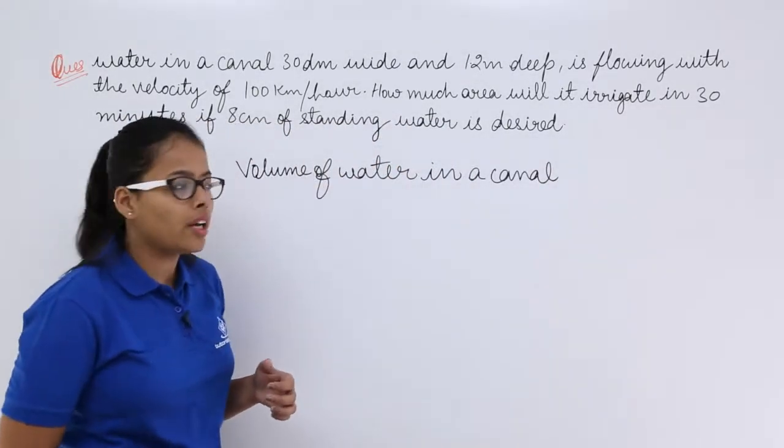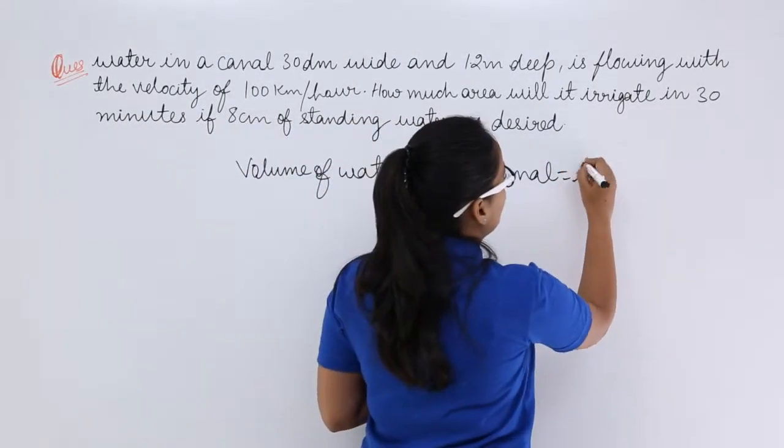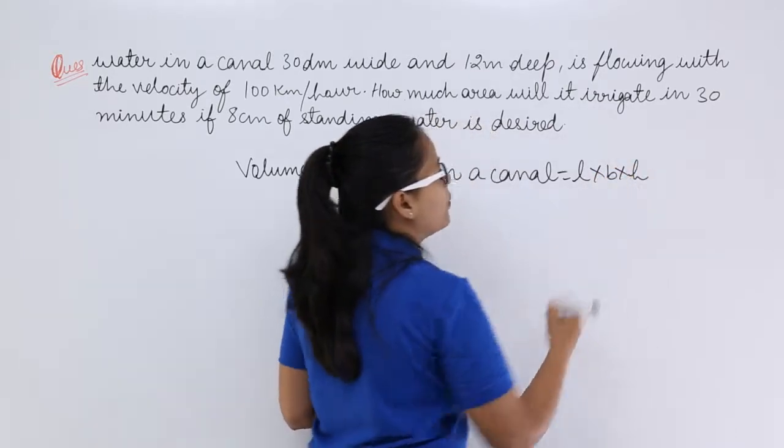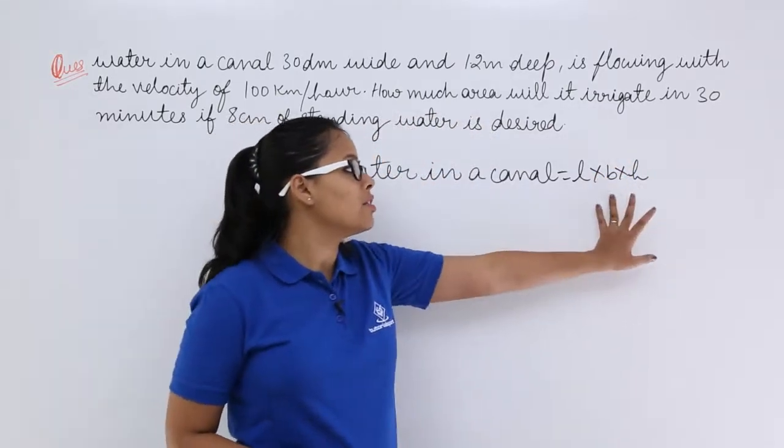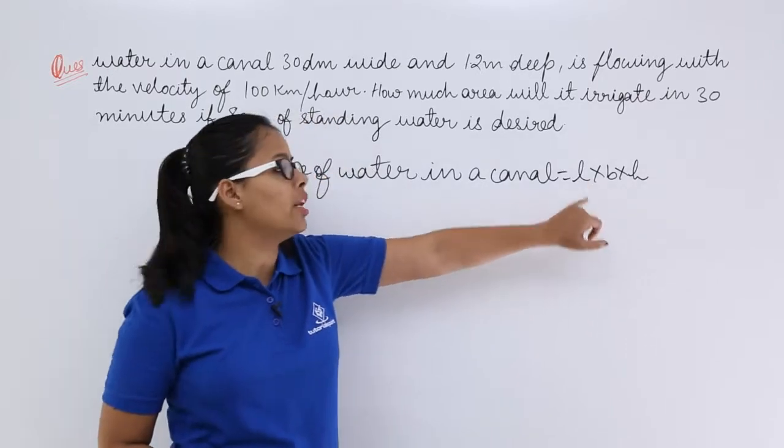Volume of the water in a canal which is length into breadth into height. You know the wideness, you know the depth but you don't know the length.